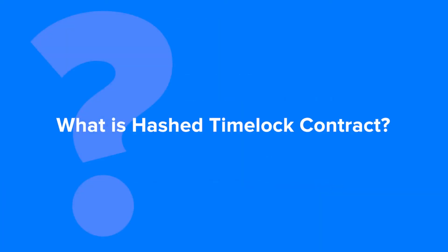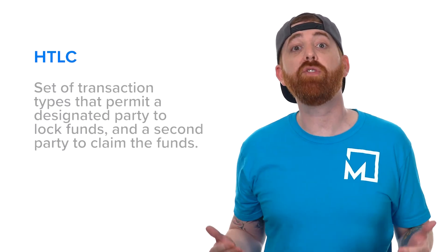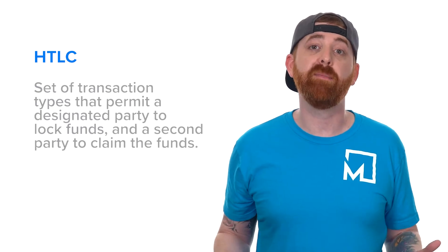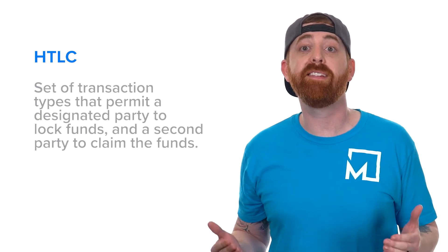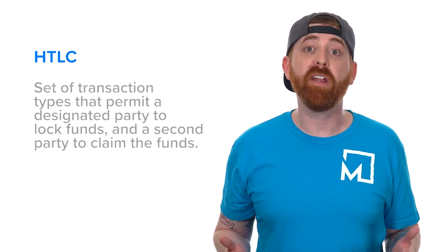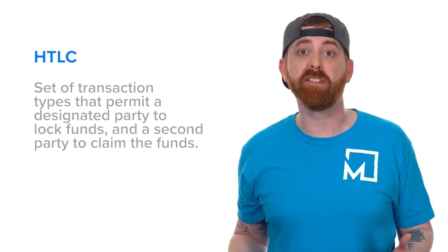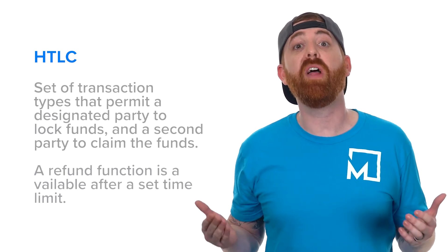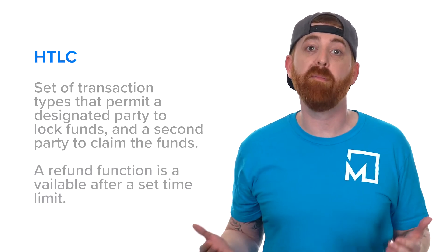Hashed Time Lock Contract. Here's what's up. The definition of hashed time lock contract, or HTLC, is a set of transaction types that permit a designated party to lock funds and a second party to claim the funds. A refund function is available after a set time limit.